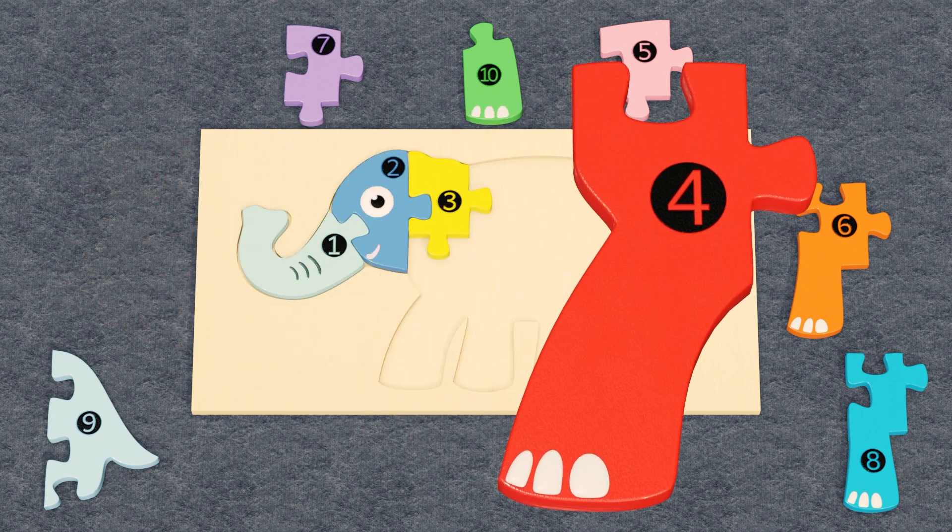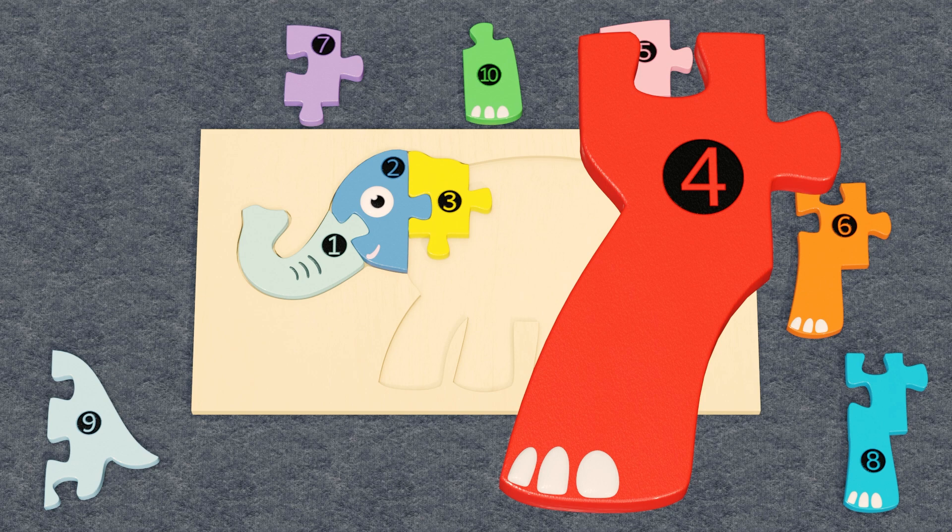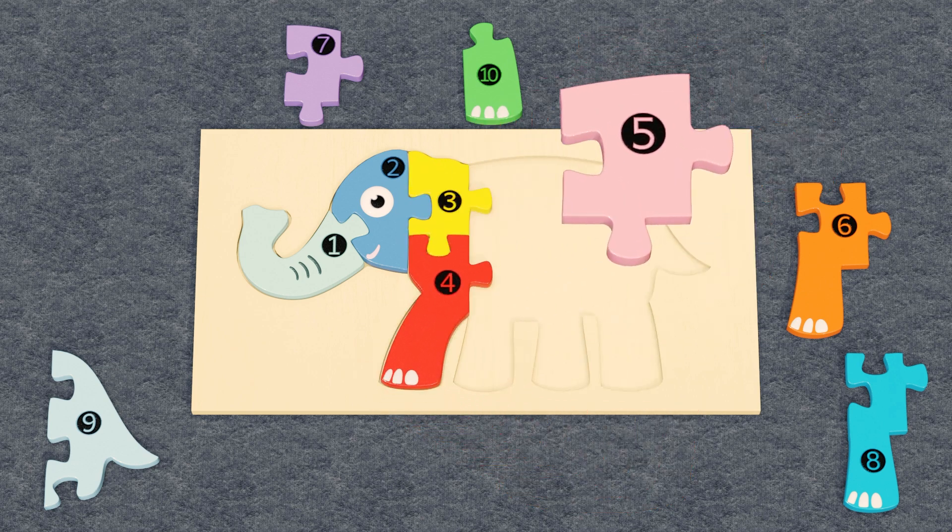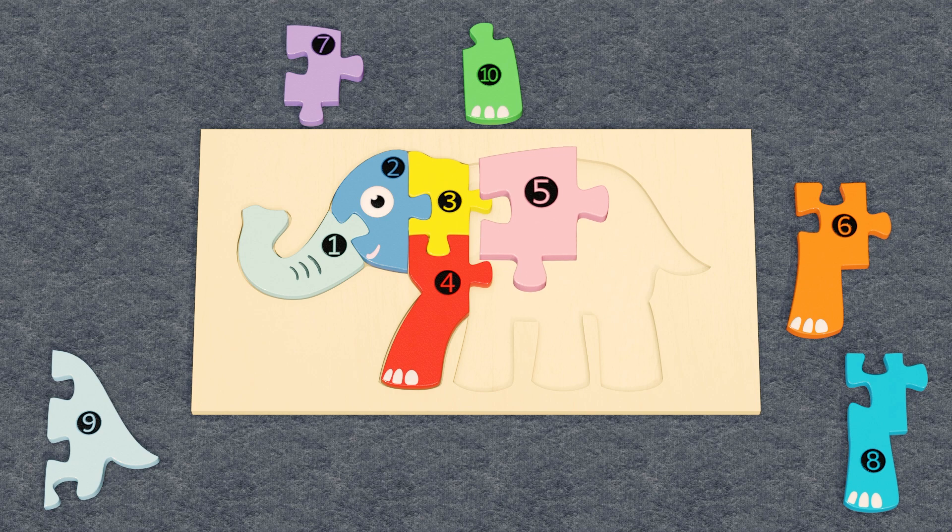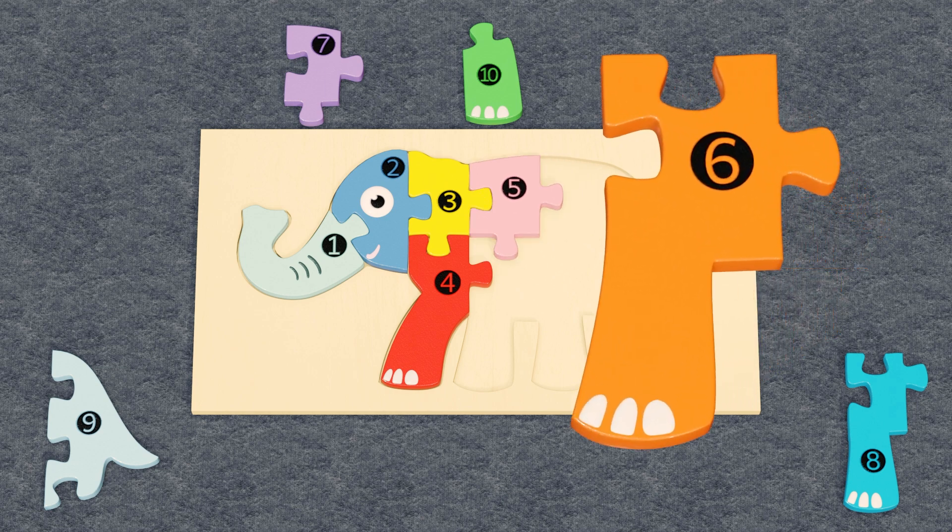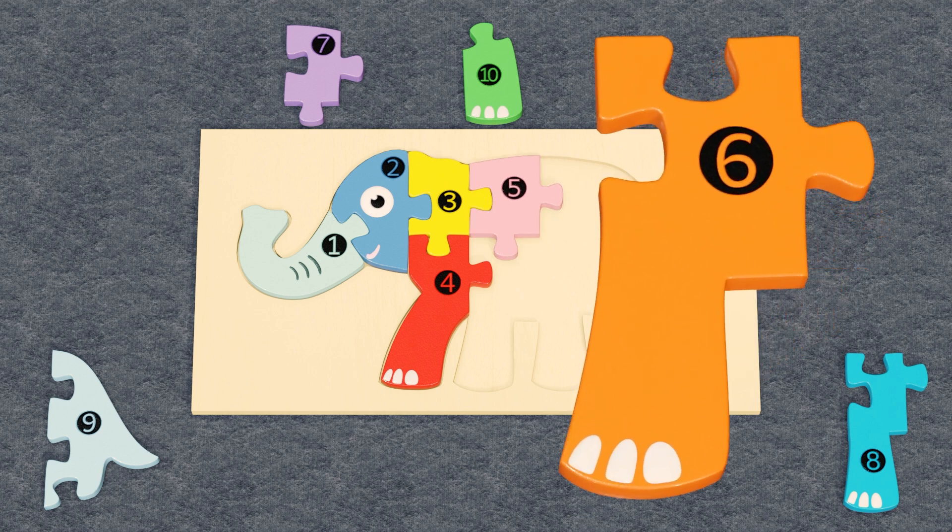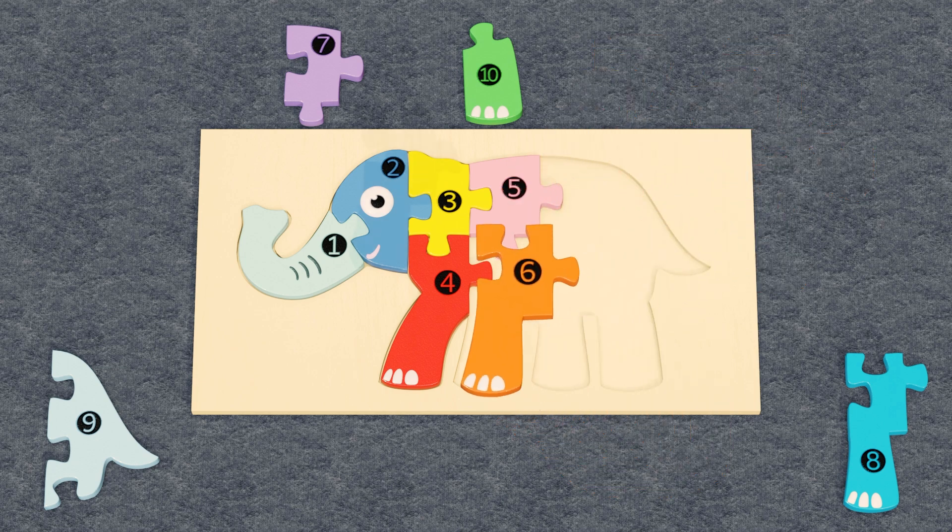Piece number four is like the front leg, so it is placed under number three. Number five matches to this place. Puzzle piece number six is also a foot, so it fits here.